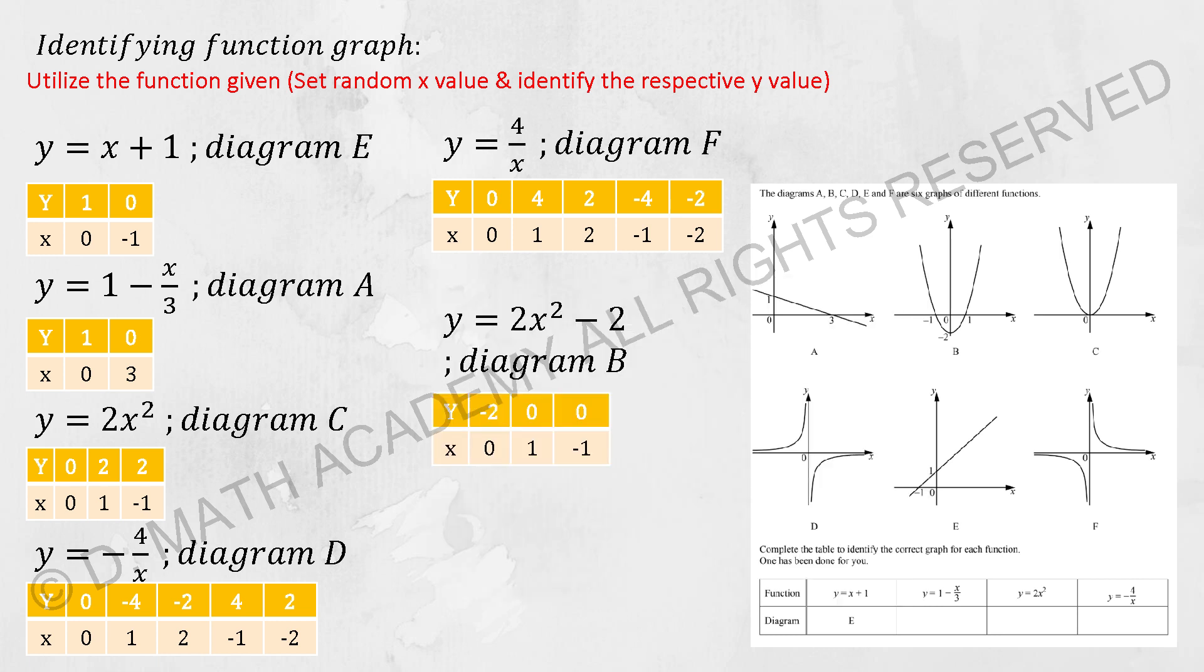For the last one, it will be Y equals negative 4 over X. I set up more varieties of numbers so that I can estimate and check which graph is the most applicable one. This one will actually be diagram D, based on the coordinates that we have gotten.